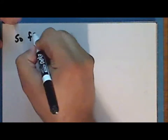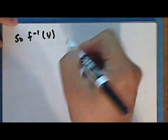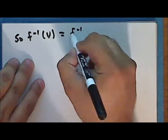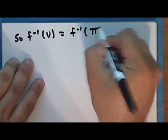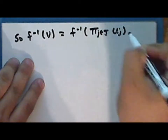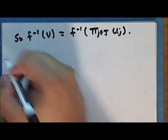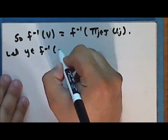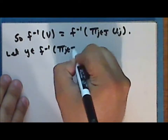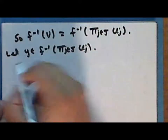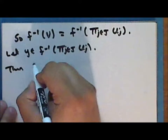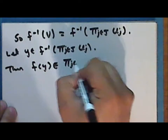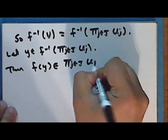So the inverse image of V under the map f is the inverse image of the product of the sets u_j under the map f. Let y be a point in the inverse image of the product of the sets u_j; then f(y) is in the product of the sets u_j.